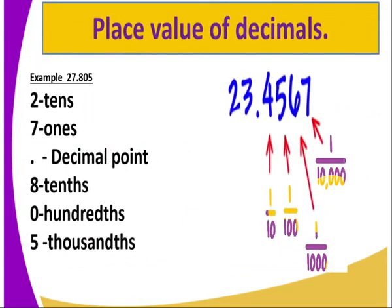Let us start with the first part — you are required to identify the place values of decimals. For example, given the number 27.8005, the numbers on the left side: starting from 7, this will be in the 1's place, while 2 is in the 10's. The numbers on the right of the decimal point will start from 10ths — so 8 is in the 10ths digit, 0 is in the 100ths, and 5 is in the 1000ths.